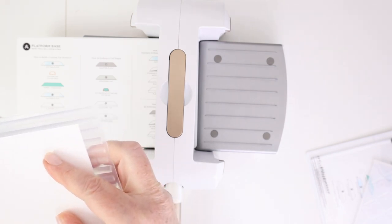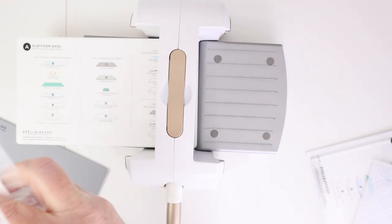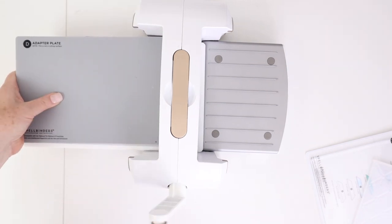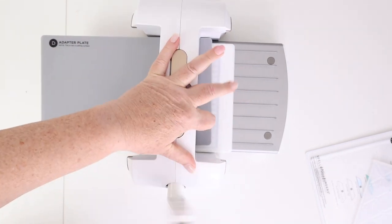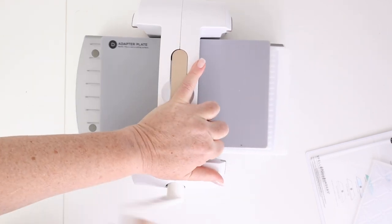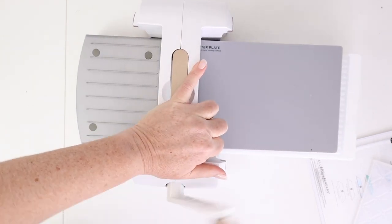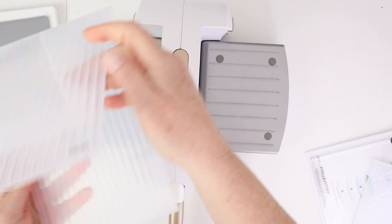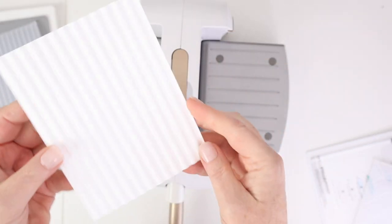So now let's try it with the other embossing folder, the corrugated. So I'm going to put an A2 piece of cardstock. Obviously those are big enough that you could fit larger pieces of paper. I am going to use the same exact sandwich that I just did with the adapter plate on top. And once again, this is the perfect combination for these 3D embossing folders.